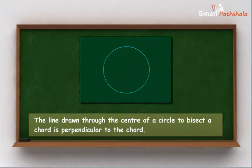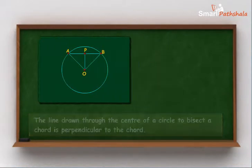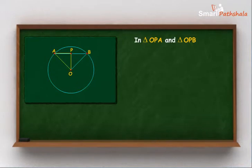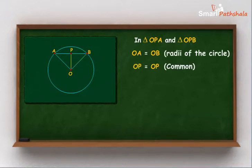Consider a circle with center O and AB as the chord. Join O with point P on AB such that PA is equal to PB. Now, in triangle OPA and triangle OPB, OA is equal to OB as they are radii of this circle. OP is common and PA is equal to PB.